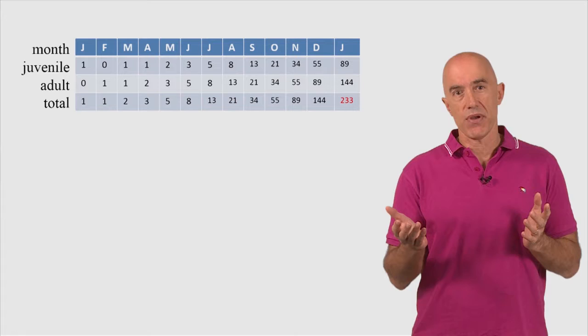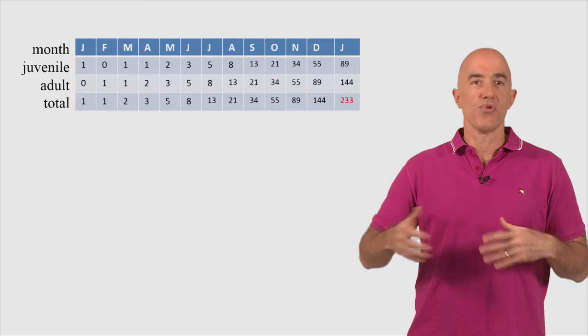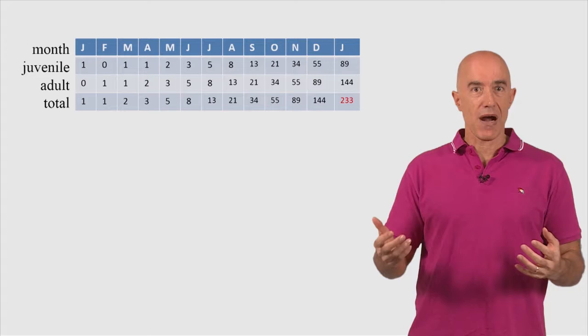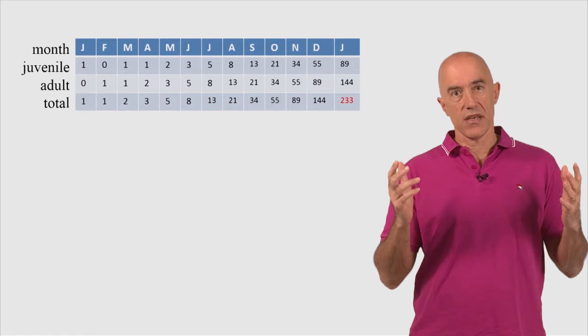So we've gone from, in one calendar year, we've gone from one rabbit pair to 233 rabbit pairs. The population is growing very fast. We use the term breeding like rabbits, because rabbit population can grow very fast because you can have newborn rabbits every month.